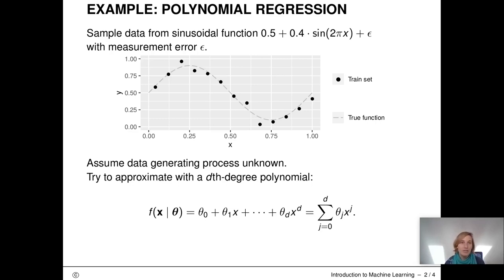The dots are sampled from this function and the dots represent the data points that we sampled. They do not lie exactly on the line because of the error epsilon.